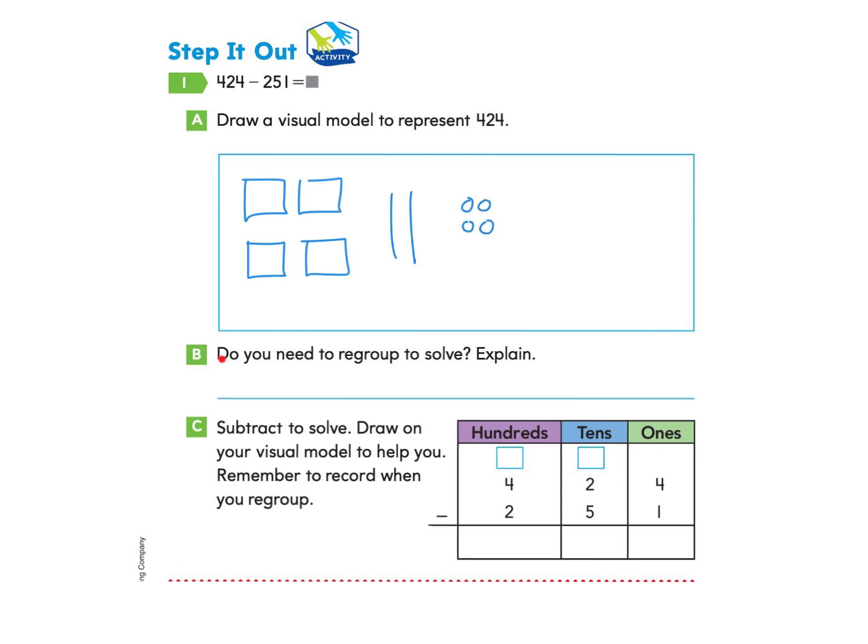Part B asks, do you need to regroup to solve and explain? Well, I see the number they want us to subtract is 251. I can look quickly and see, do I have one to subtract from here? Yes. Do I have five tens to subtract? Ooh, no, I don't. So I can answer, yes, I will need to regroup because I cannot subtract five tens from two tens.